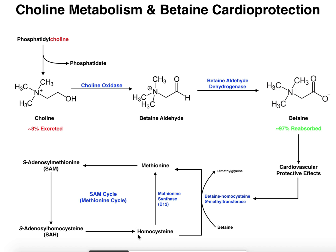Elevated levels of homocysteine in the blood actually correlate with cardiovascular disease and problems with the vasculature, such as atherosclerosis. It may not be directly due to homocysteine itself, but the correlation with cardiovascular disease is established. So it's important to clear homocysteine by converting it back to methionine.